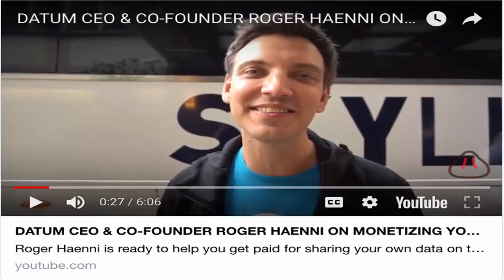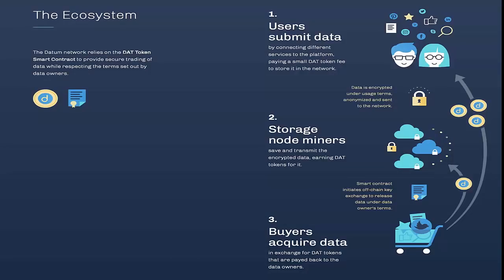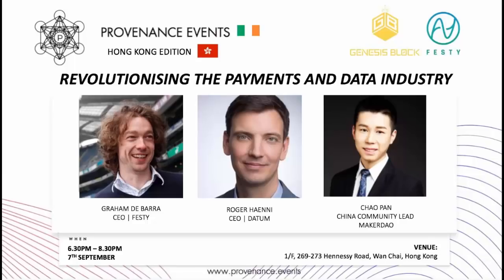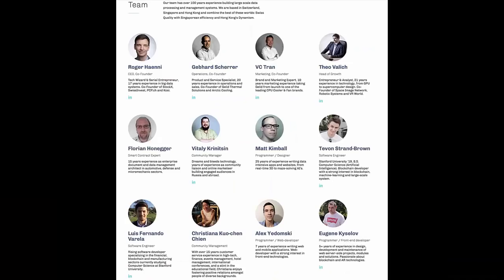First, data storage: A) Decentralized — not controlled by any single party. B) Secure — encrypted at source and immutable. C) Performant — firstly, latency; secondly, throughput. D) Functionality rich — firstly, able to query data; secondly, able to search data.